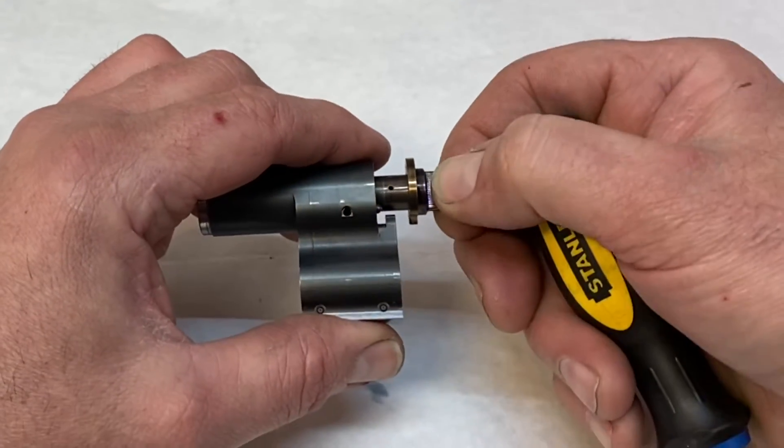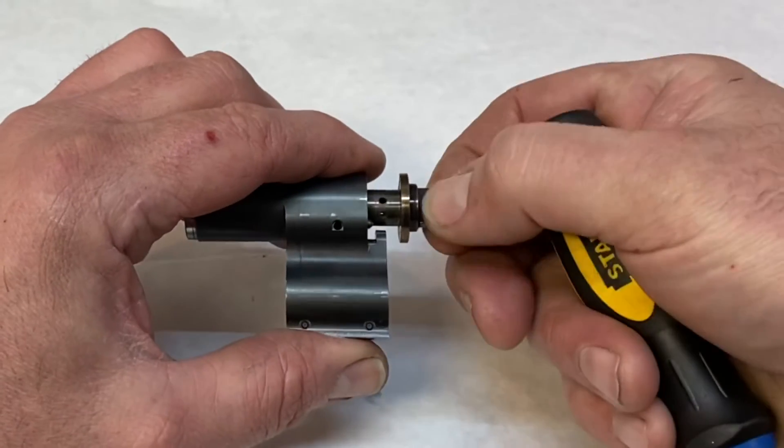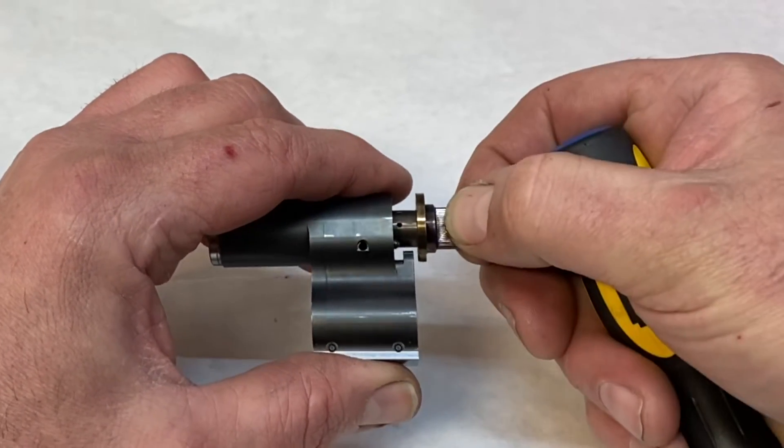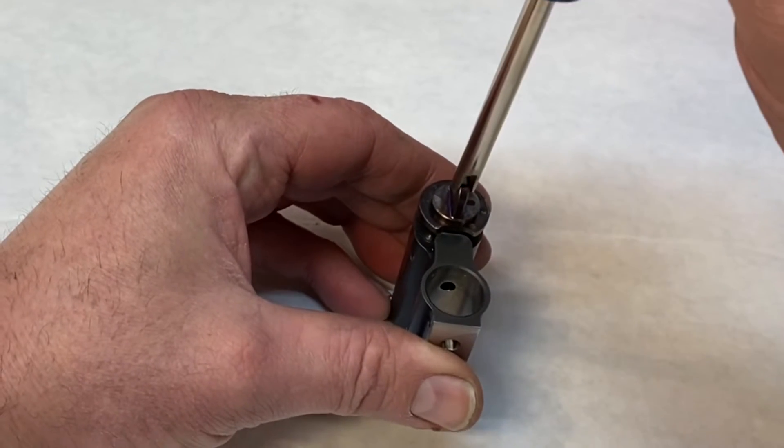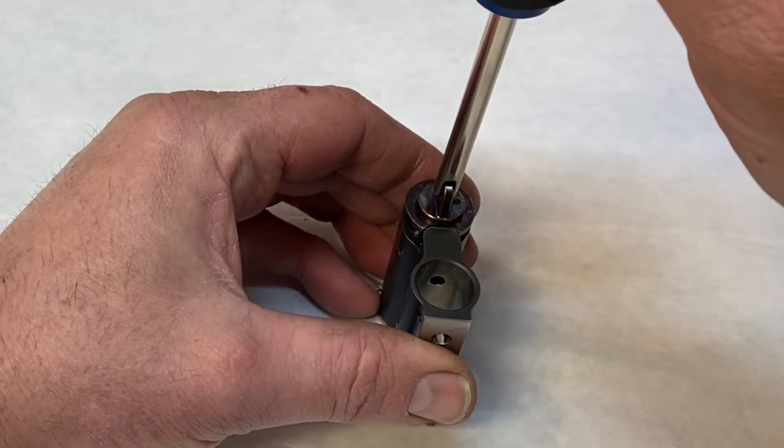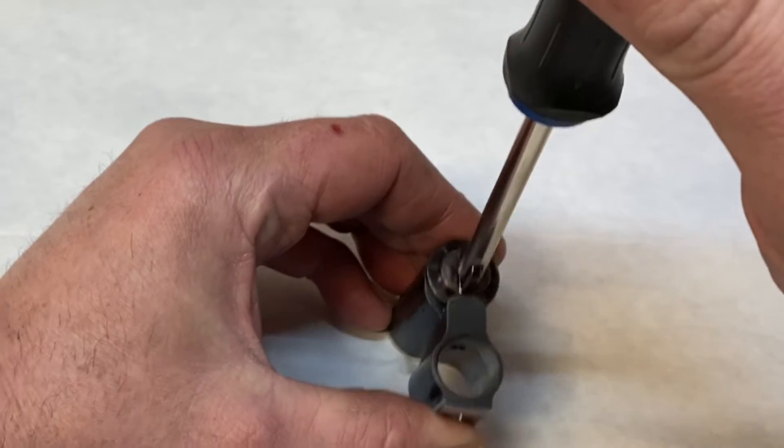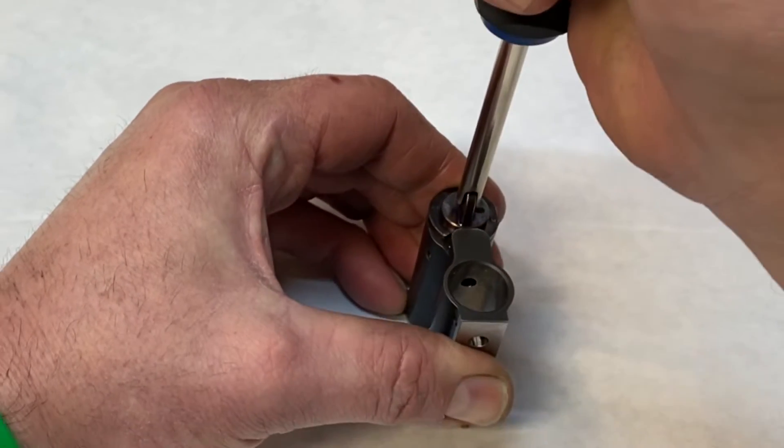The part which modulates the gas is this cup right here that has bigger and smaller sizes. To insert the cup, you orient it with this cutout at the six o'clock position, and then you just push down and rotate.